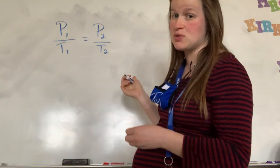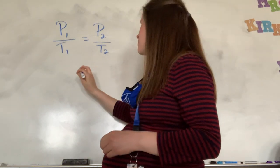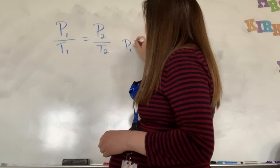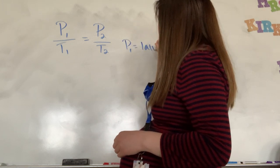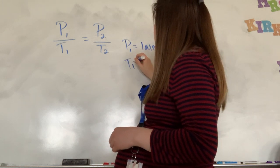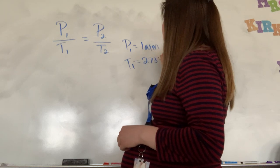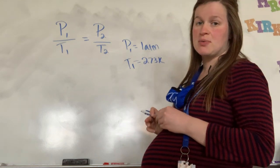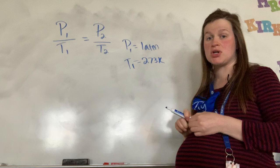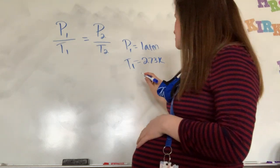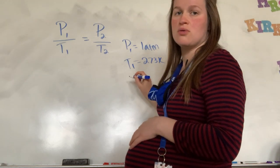So it says at STP, so remember STP means that my pressure is going to be 1 atmosphere and then my temperature is going to be 273 degrees Kelvin. Remember in chemistry we work in Kelvin for temperature.